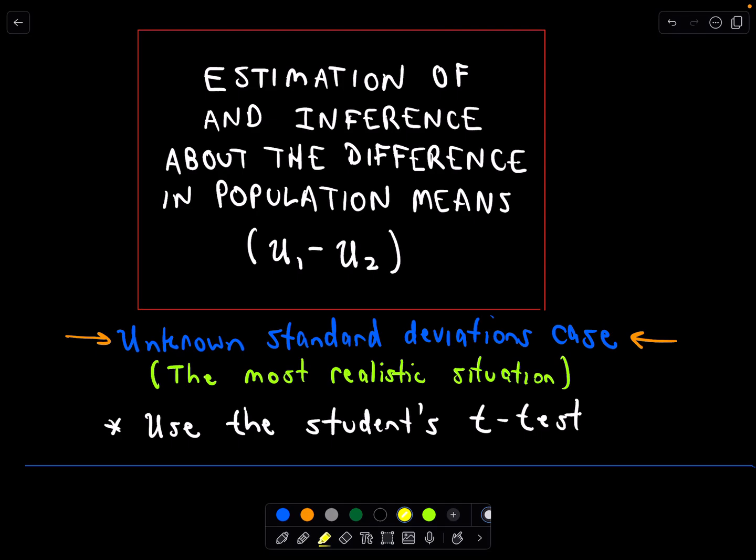In this video we're going to talk about the estimation of and the inference about the difference in population means. We're going to compare two population means and usually we'll try to ask ourselves are they the same or are they different, and we'll see that in this example.